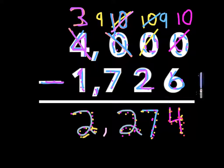Ten minus six is four. Nine minus two is seven. Nine minus seven is two. Three minus one is two.